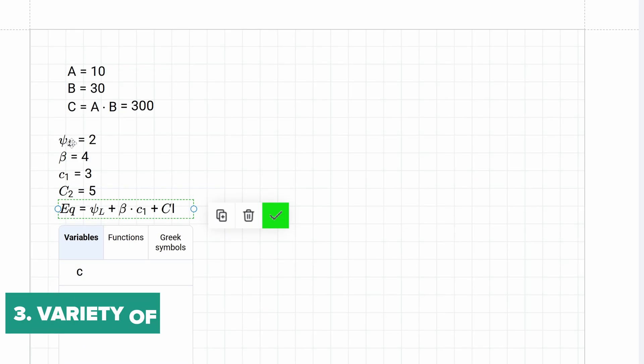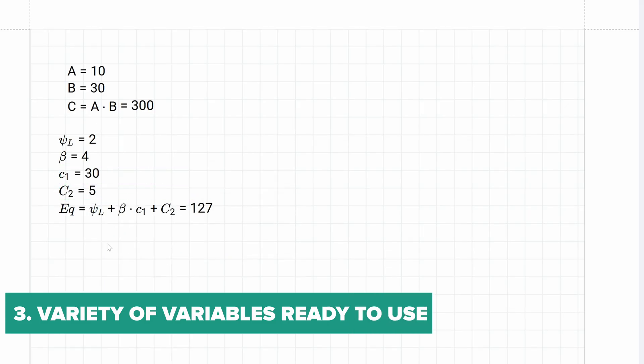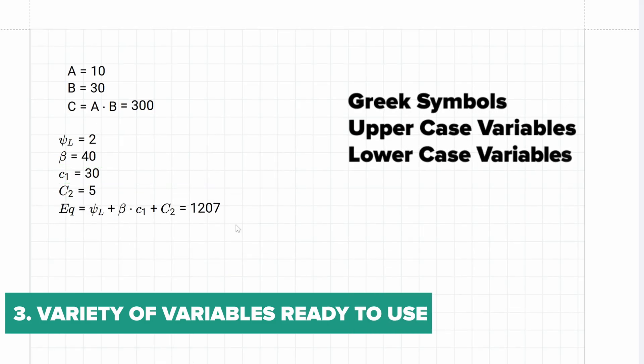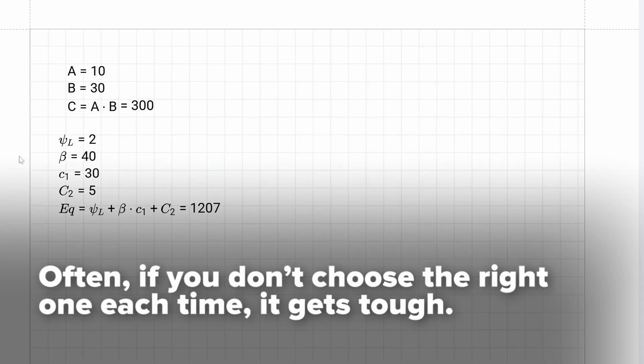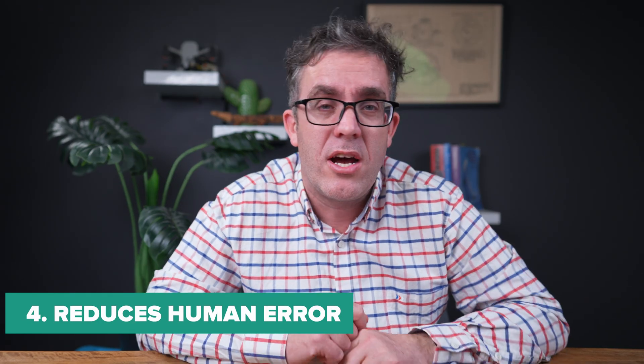And in addition to that, you may have a lot of key variables that you may need to use. So for example, we're using Greek symbols and other variables that are uppercase and lowercase. Quite often, if you're not times the right one every single time, it can be very hard. This is where MathJot comes into its own to help you out with that.